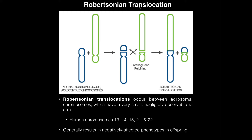Down syndrome has another name — it's also called Trisomy 21 — because Down syndrome is an aneuploidy of chromosome number 21. That means the individual affected has three copies of chromosome 21, whereas a normal healthy human being is supposed to have only two copies of every chromosome.